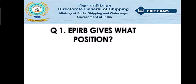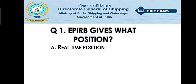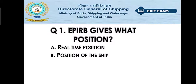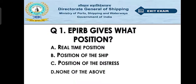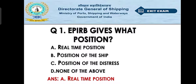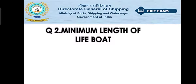Question number one: EPIRB gives what position? Option A: real-time position. Option B: position of the ship. Option C: position of distress. Option D: none of the above. The right answer is option A — real-time position. Basically, EPIRB gives the real-time position.